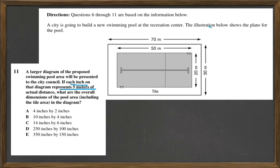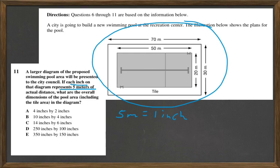So we're wanting to know what are the dimensions of the whole thing. And it gives us that 5 meters equals 1 inch. So all we have to do is divide.